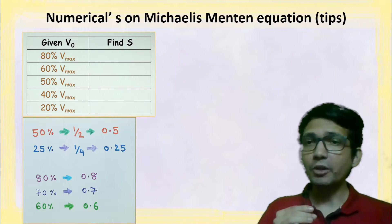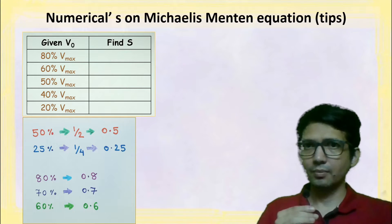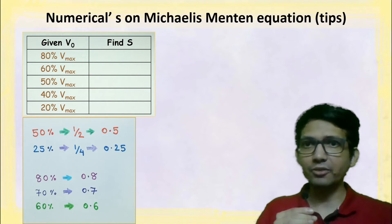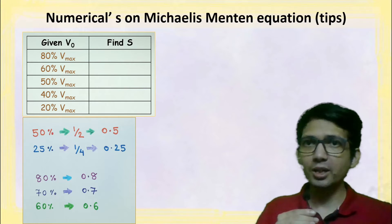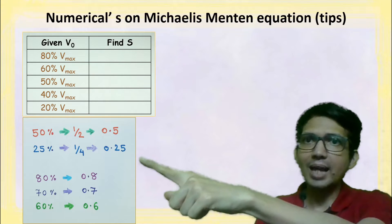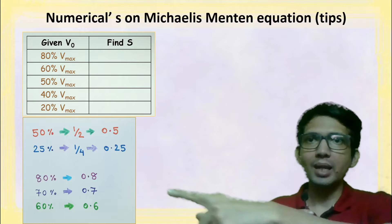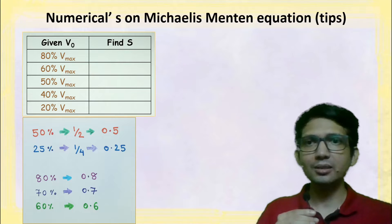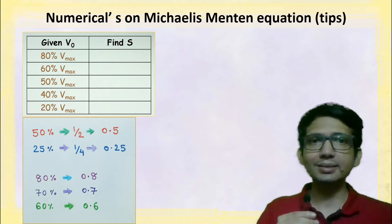Before moving further, let's understand a simple concept. 50 percent means half and can be represented as 0.5. 25 percent means one-quarter, represented as 0.25. Similarly, 80 percent can be represented as 0.8, and 70 percent as 0.7.